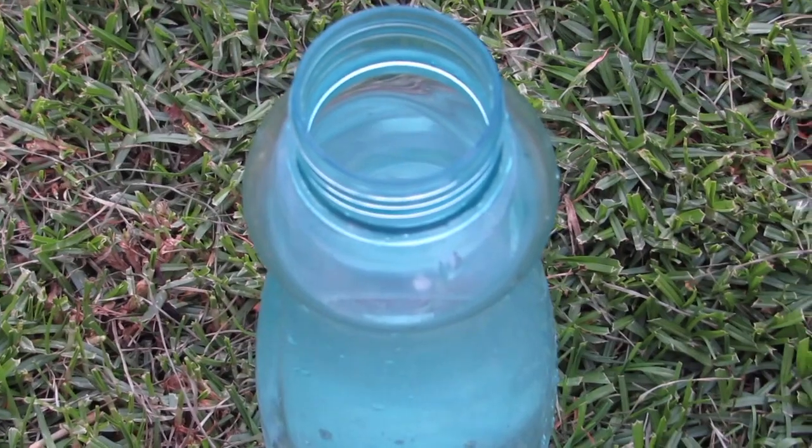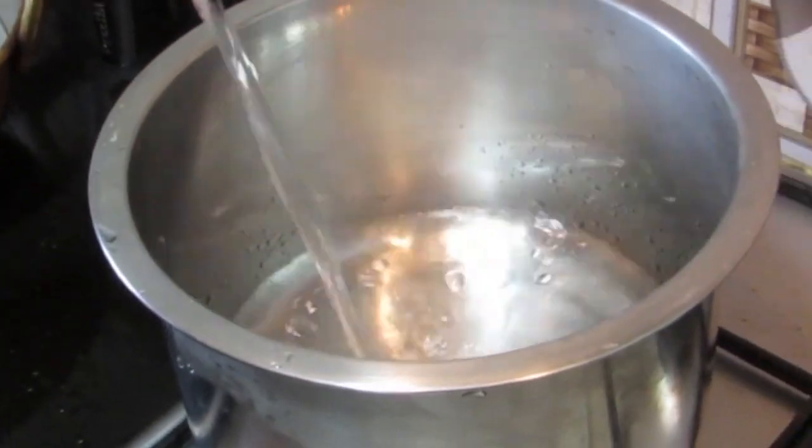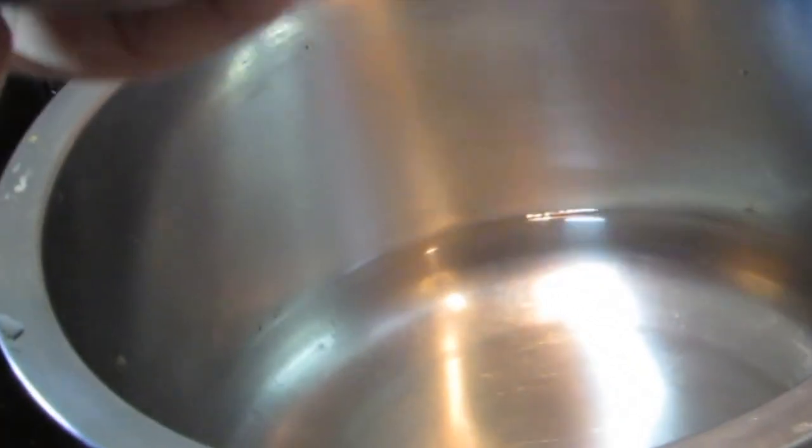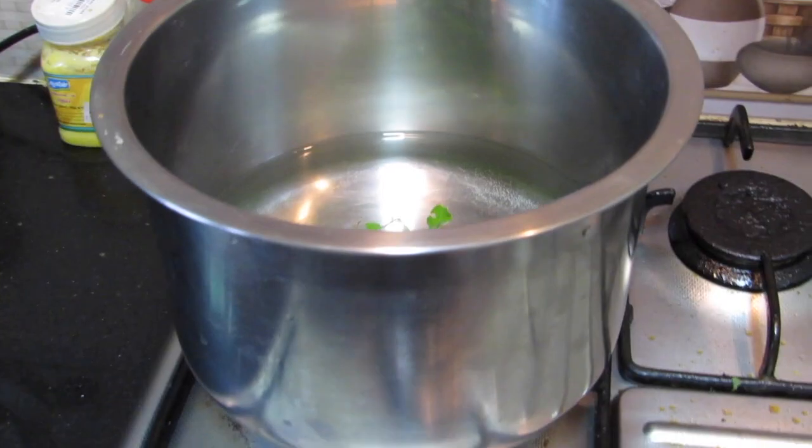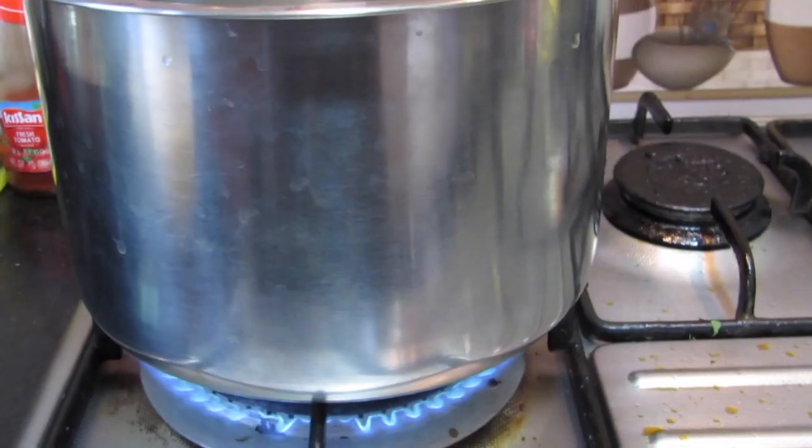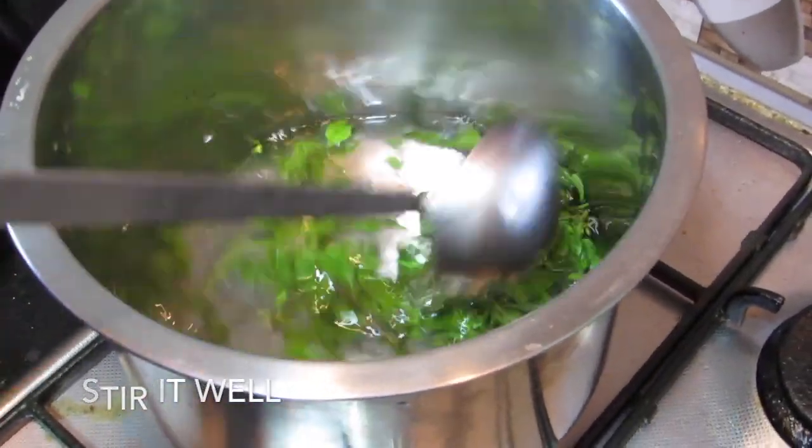We need a cup of tulsi leaves and one liter of water. In a vessel add in the water and the tulsi leaves and keep it on high flame. Once it starts boiling, reduce the flame to the lowest. Simmer on a very low flame till the water is reduced to half.